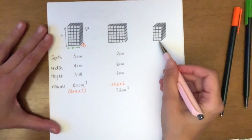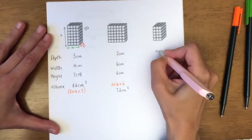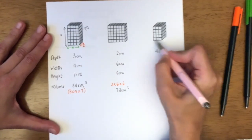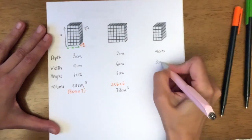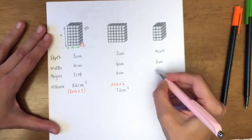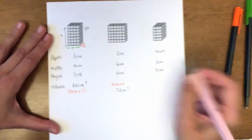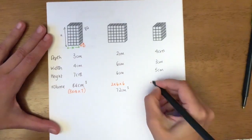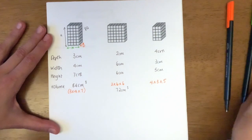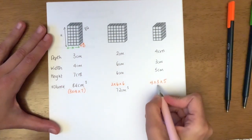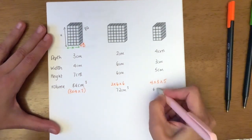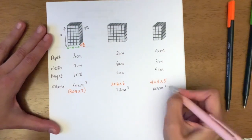The last one - the depth is four, the width is three, and the height is five. So I do four times three times five. Four times three is 12, and 12 fives are 60. 60 centimeters cubed.